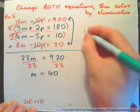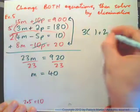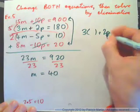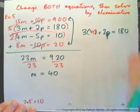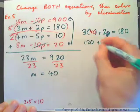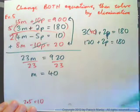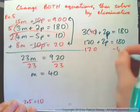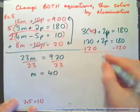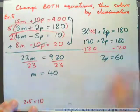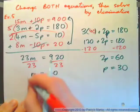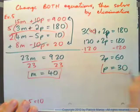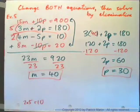And then find p, just go 3 times 40 plus 2p equals 180. So 3 times 40 is 120, so 120 plus 2p equals 180. And solve that, subtract 120. And we have 2 pens cost 60 cents, so 1 pen cost 30 cents. So we have the value of the marker is 40, and the value of the pen is 30 cents.